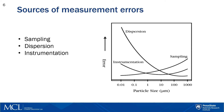Other things to consider when doing laser diffraction are sampling and sample dispersion. There are three main sources of error: sampling, dispersion, and instrumentation. As you can see from this plot, proper dispersion is very important in the smaller size range, while if you have larger particles or a very wide particle size range, then sampling becomes progressively more important.